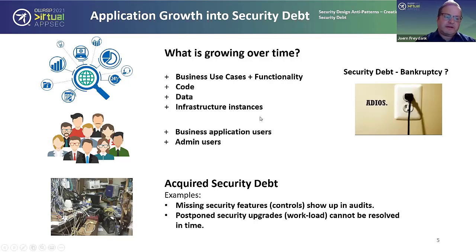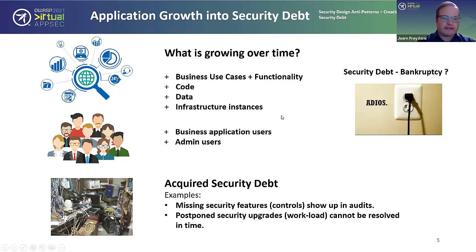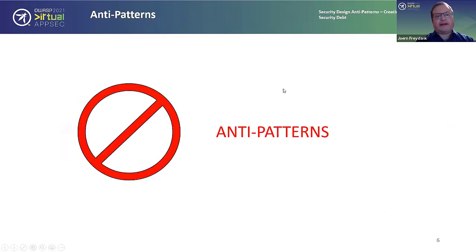In the bankruptcy case for security debt, management notices the application cannot be fixed in time anymore and makes the decision to create a shadow tech stack — with the promise that the new stack will do everything much better. For the developer, unfortunately, they may or may not be part of the new solution. That's the sad truth: most of the time the people are changed out with the project too.